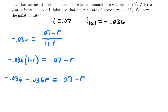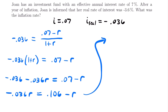Combining like terms, we add 0.036 to both sides to get negative 0.036R equals 0.106 minus R, since 0.07 plus 0.036 is 0.106. Adding R to both sides gives 0.964R equals 0.106. Dividing both sides by 0.964 solves for R, the inflation rate, giving R equals 0.106 divided by 0.964.